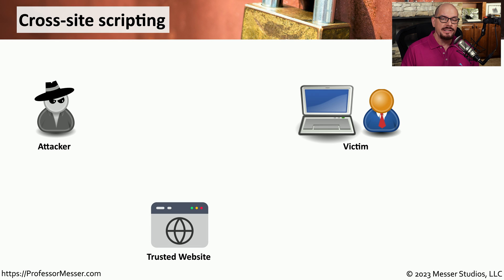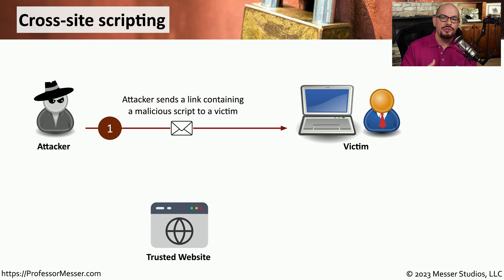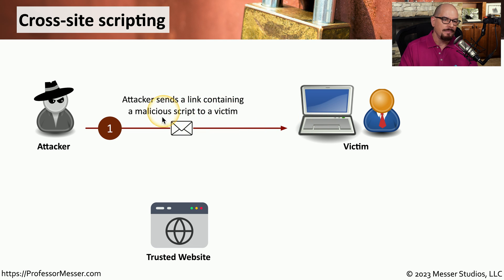From a high level, let's see how a cross-site scripting attack might be exploited. We start with the victim — their system — and a trusted website they commonly associate with. The attacker can send a link to the victim that has a malicious script inside of it, delivered over email, text message, or any other method that would get that malicious link into the victim's hands.